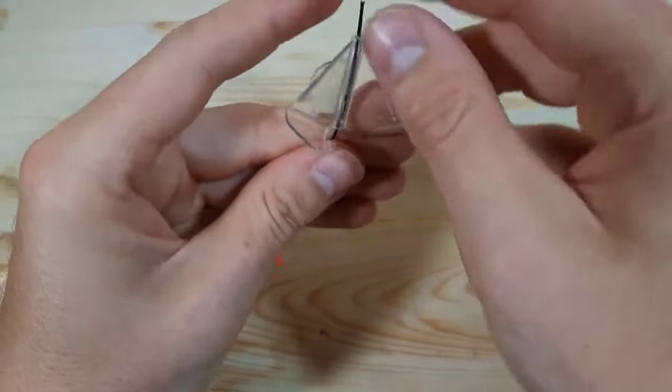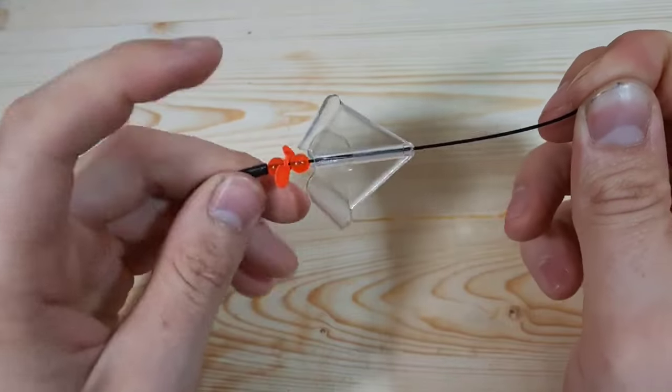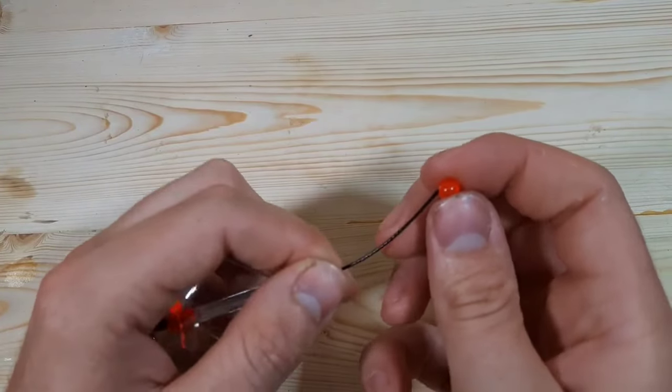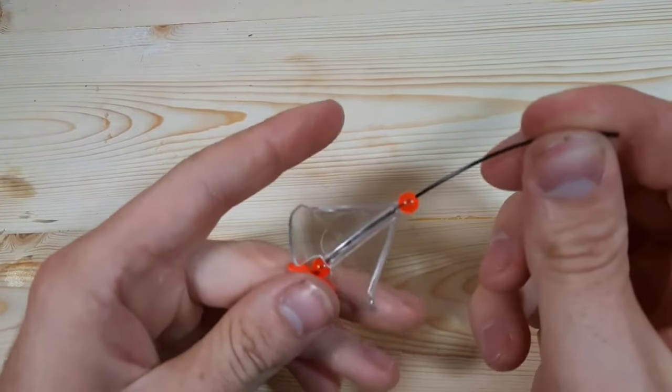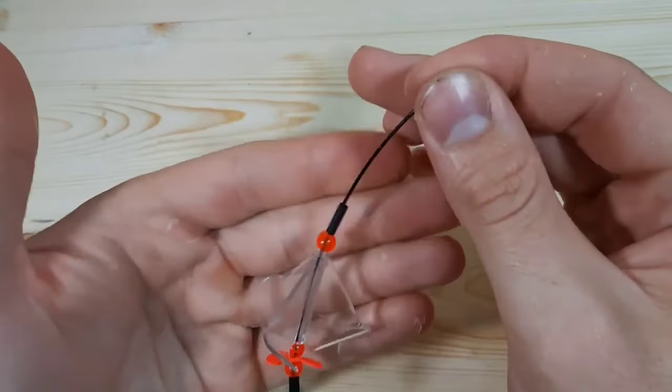Now we can put on the big buzz bait blade. With this pound leader the blades spin really nice. Now we go ahead and add the second bead on top of the buzz blade, and next we're going to put on another crimp sleeve. Make sure you have your components in this order.